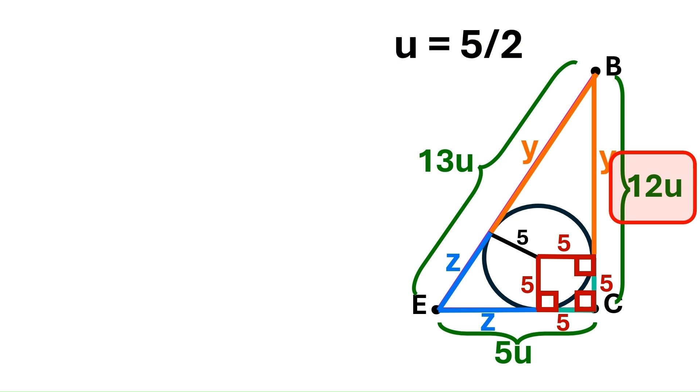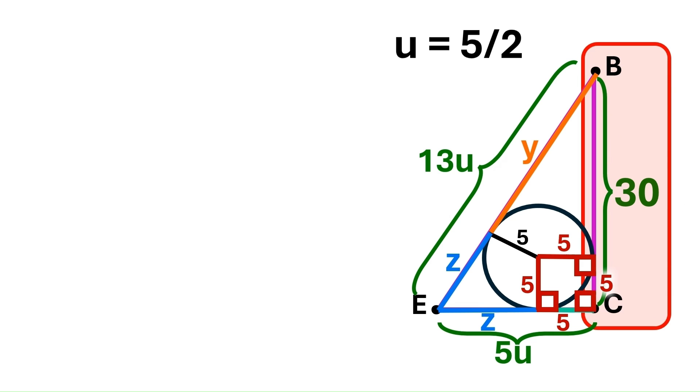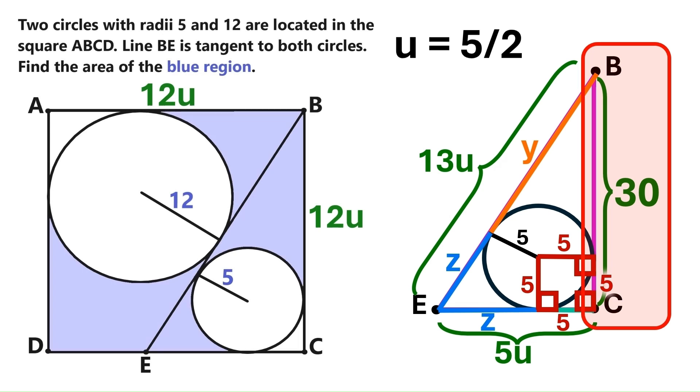Now this side's length is 12U. 12 times 5 over 2 is 30. Excellent! We've just found the side length of the big square. I'll now bring back the original image.